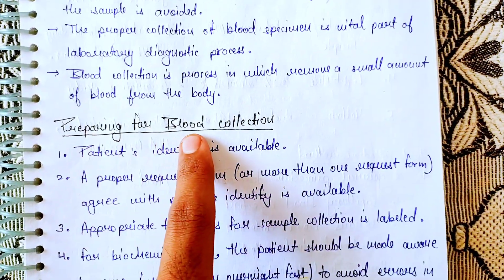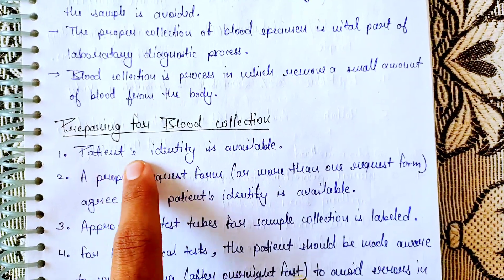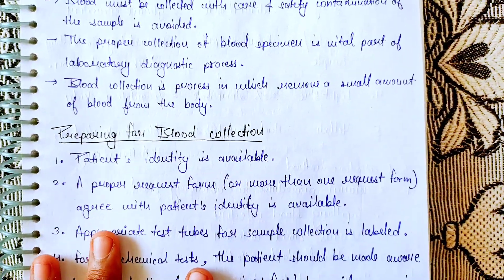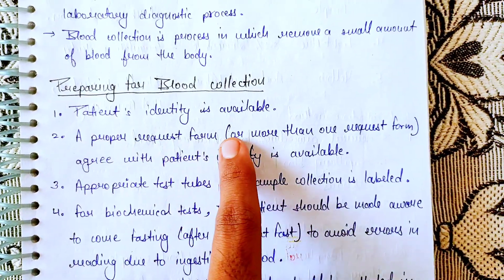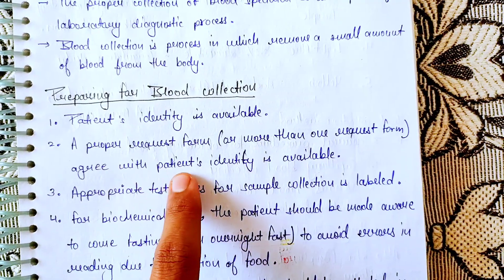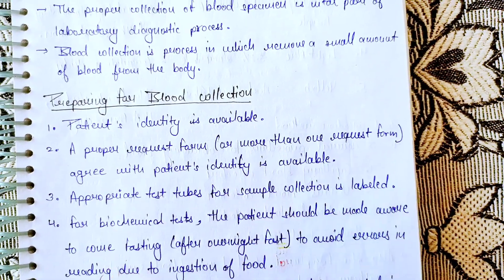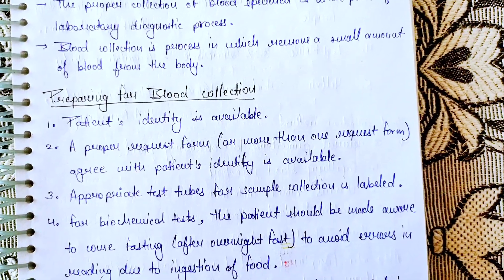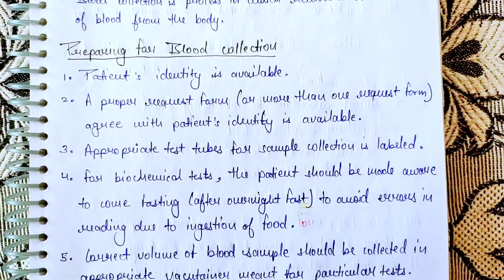Now, how do we prepare for blood collection? First of all, patient identity must be confirmed. Then, a proper request form — or more than one request form — must agree with the patient's identity.